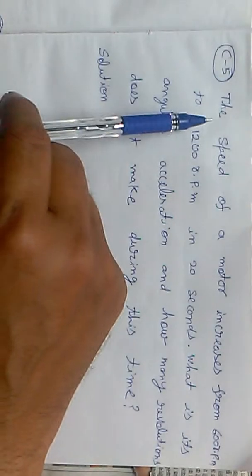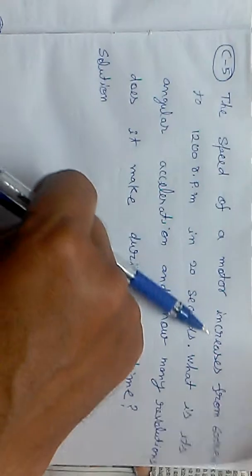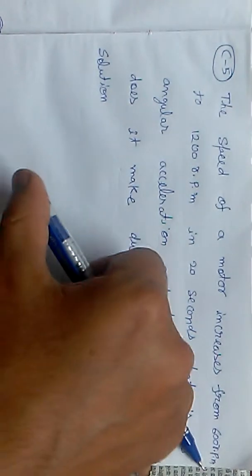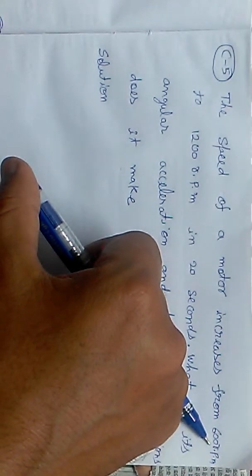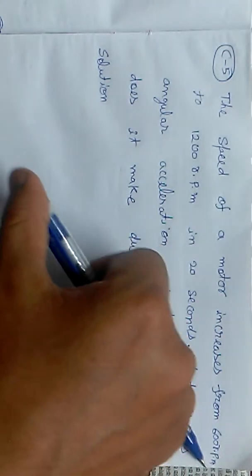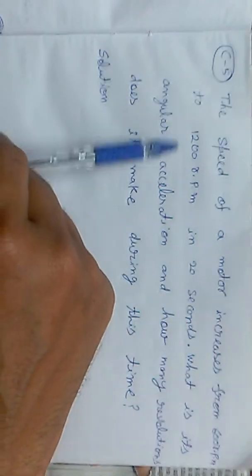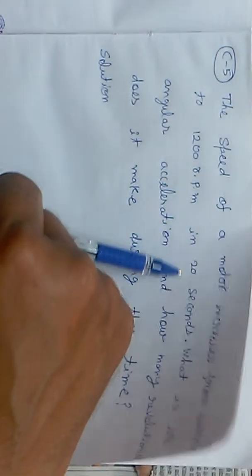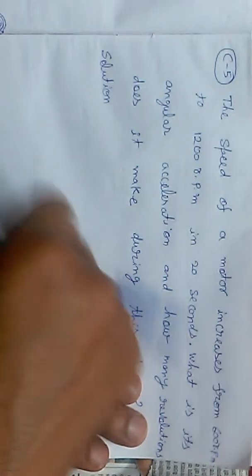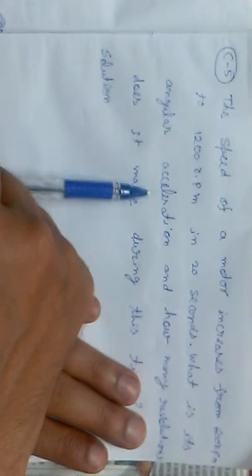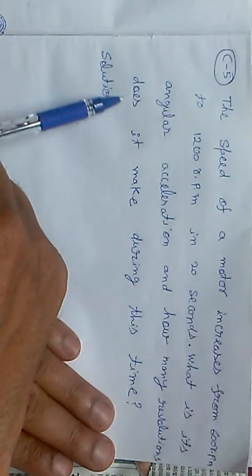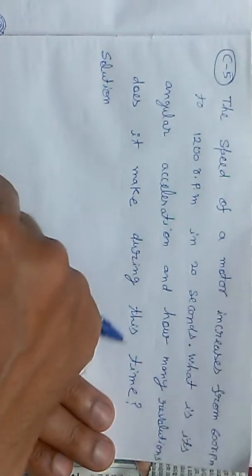Bismillahirrahmanirrahim. The speed of a motor increases from 600 rpm, revolution per minute, to 1200 rpm in 20 seconds. What is its angular acceleration and how many revolutions does it make during this time?